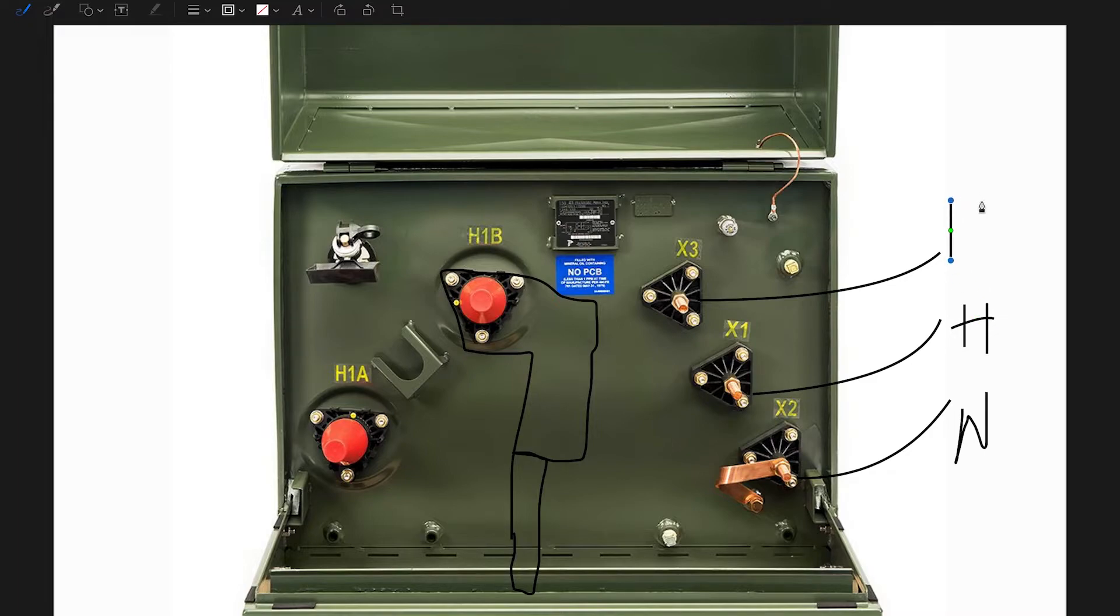So you have two hots and a neutral. Between the hot and the hot, you're going to have 240 volts. And then between the hot and the neutral, you're going to have 120 volts.